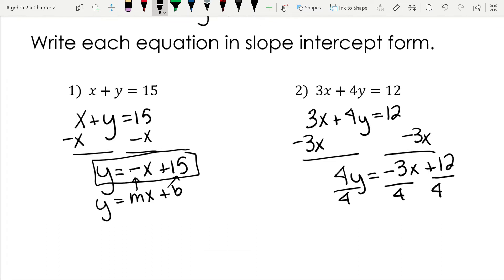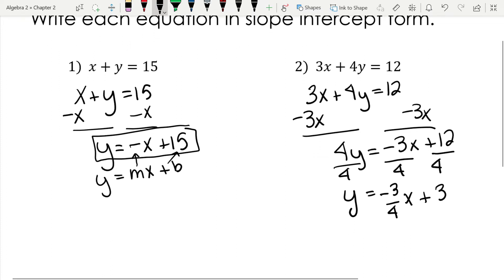4 divided by 4 is just y equals negative 3 fourths does not reduce. So we're just going to leave it as a fraction. And then 12 divided by 4 is 3. And once again, we have our slope-intercept form. Let me just write it here. y equals mx plus b, where negative 3 fourths is my slope, and 3 is my y-intercept.